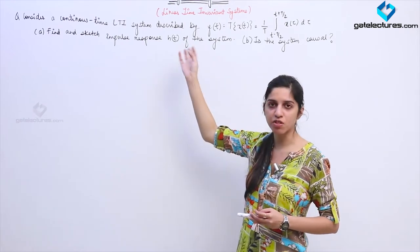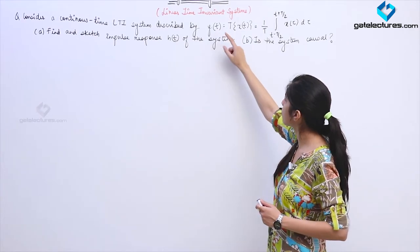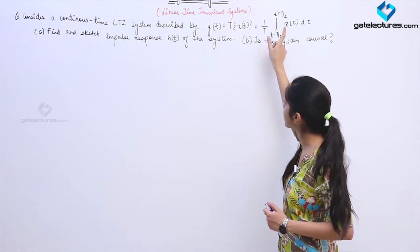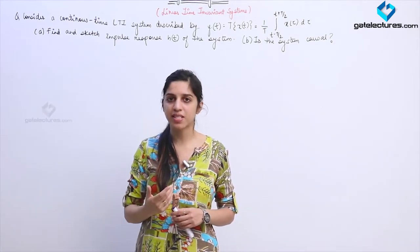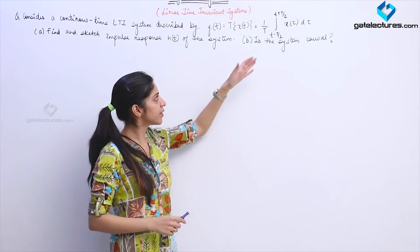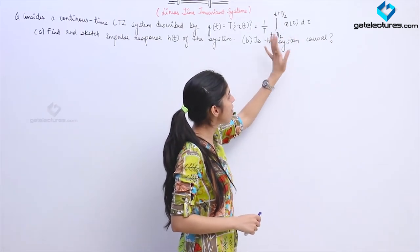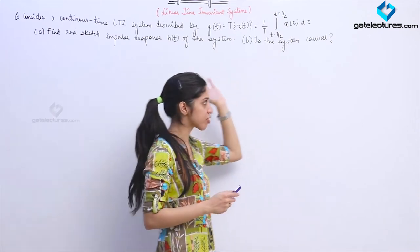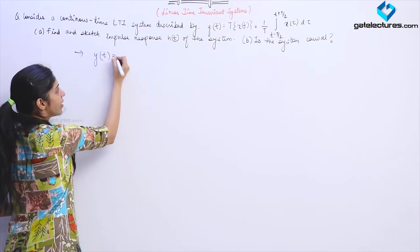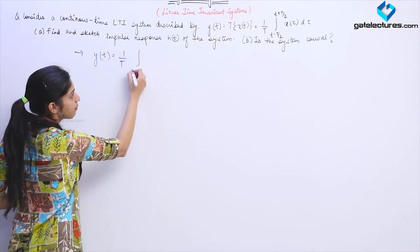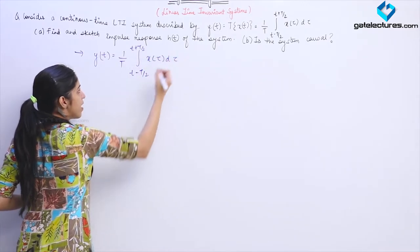Once we have calculated the impulse response h(t) of the system we can check causality easily. When you look at the equation relating the input and output you see there is an integral operation. We have already seen that convolving any signal with a unit step signal gives an integral operation. So we expect some unit step functions to appear in the impulse response of this system. The output is defined as: y(t) = (1/T) × integral from t − T/2 to t + T/2 of x(τ) dτ.